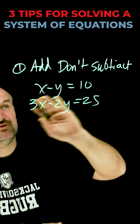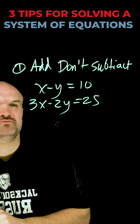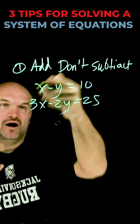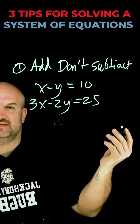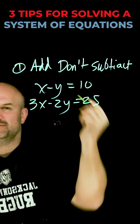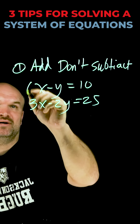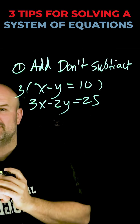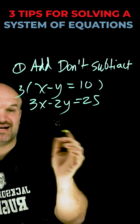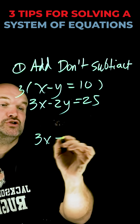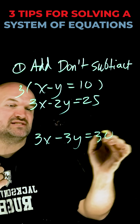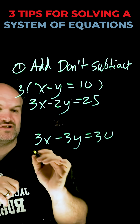My next step is to add, don't subtract. It's so common for students to say, if I'm going to use elimination, I want them to be exactly the same, so the easiest thing I'm going to do is multiply everything by 3x. You can use this strategy — there's nothing wrong with subtracting your two equations.